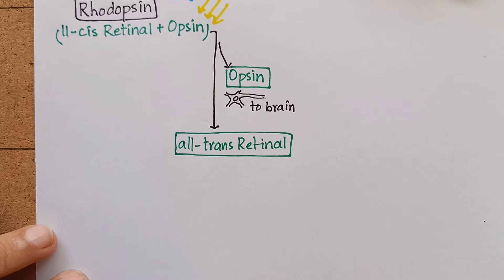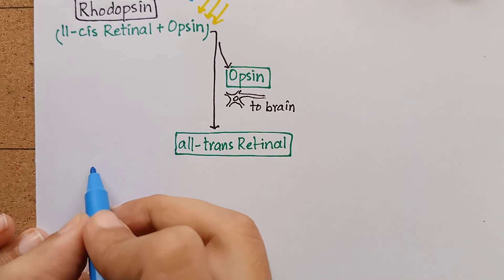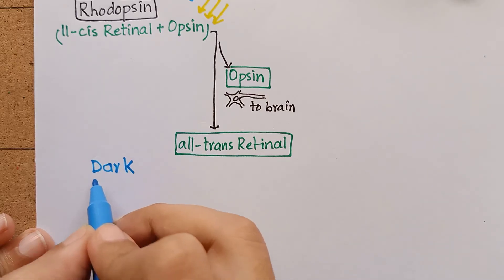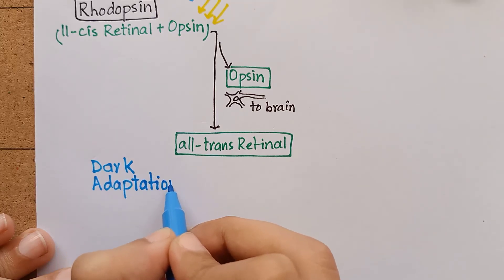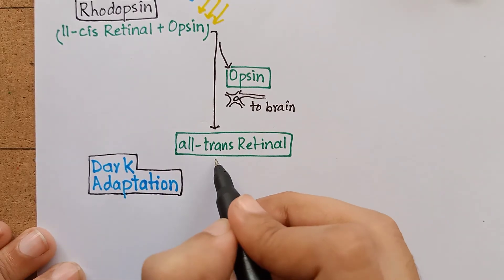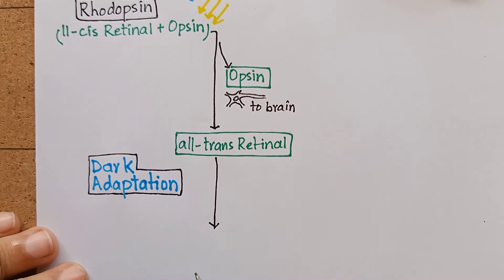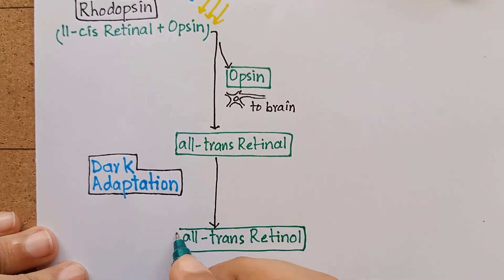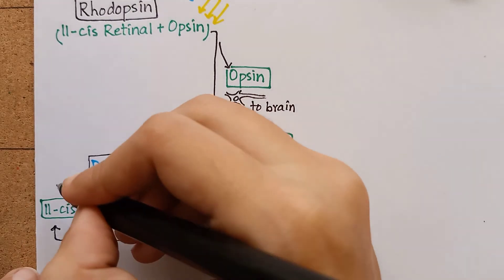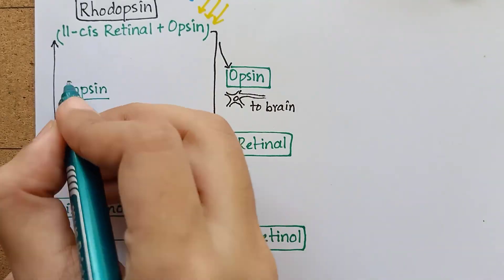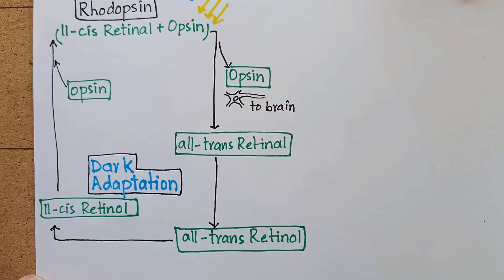This dissociation of retinal and opsin degenerates the rhodopsin pigment, resulting in decreased sensitivity of rod cells to bright light, which allows cone cells to mediate vision in a bright environment. While in the darkness, the all-trans retinal molecule is recycled to regenerate rhodopsin pigment for dark adaptation. Regeneration of rhodopsin requires reduction of all-trans retinal to all-trans retinol, which then isomerizes into 11-cis retinol, and 11-cis retinol finally gets converted into 11-cis retinal by oxidation. This is called Wald's visual cycle.